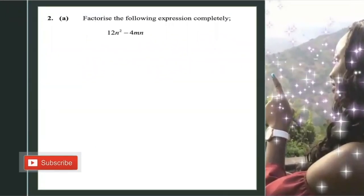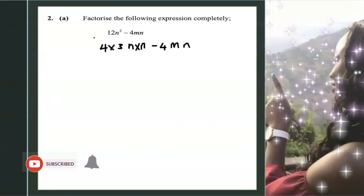Question 2a is asking us to factorize the following expression completely. Here we have 12n² - 4mn. First, if you realize 12, we can rewrite 12 as 4 times 3, and n squared is the same thing as n times n. Then I have minus 4mn. So what I have here is the same thing as the above expression. The only reason why I rewrite 12 as 4 times 3 and not 6 times 2, because here I have this to be 4, and I know that 4 can go into 12 three times.